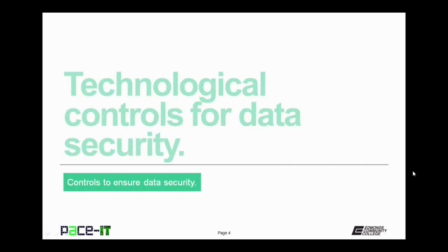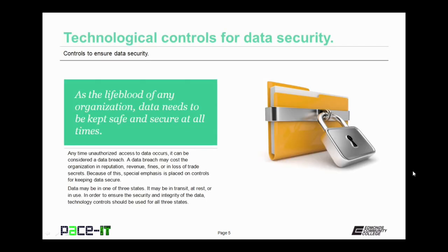I'm going to begin by talking about technological controls for data security. As the lifeblood of any organization, data needs to be kept safe and secure at all times. Anytime unauthorized access to data occurs, it can be considered a data breach. A data breach may cost the organization in reputation, revenues, fines may be levied against the organization, or they may lose trade secrets. Because of this, special emphasis is placed on controls for keeping data secure.